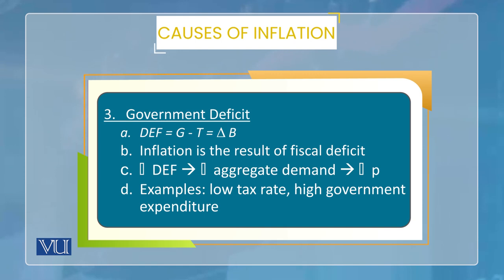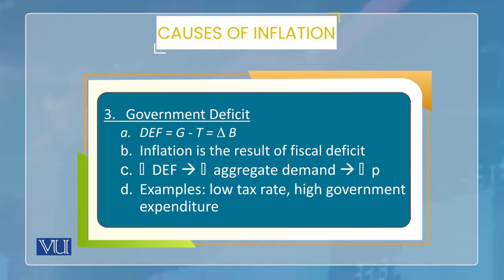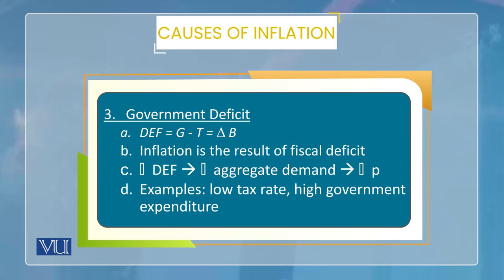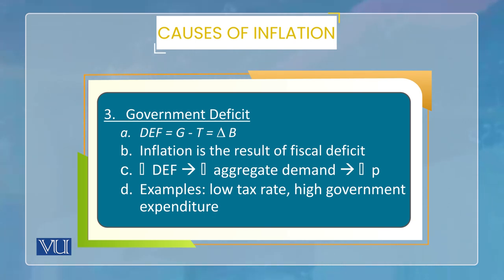اب ہم causes کے اندر اگلے cause کی طرف جاتے ہیں — یہ بھی demand-pull inflation کا ہی ایک factor ہے اور یہ fiscal side سے ہے: government deficit. Government deficit کی وجہ سے بھی demand create ہوتی ہے اور demand create ہونے کی وجہ سے ultimately demand-pull inflation آتا ہے. Deficit جو ہوتا ہے وہ G minus T کی equal ہوتا ہے — G is government expenditure and T is taxes. ان کا difference deficit ہے اور وہ ΔB (change in bonds) کی equal ہے — کیونکہ government اس difference کے مطابق bonds کے through loan لیتی ہے.